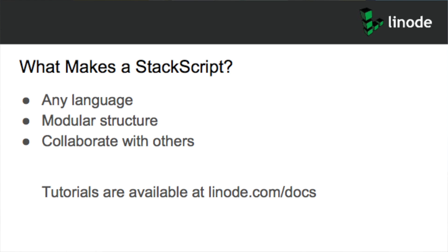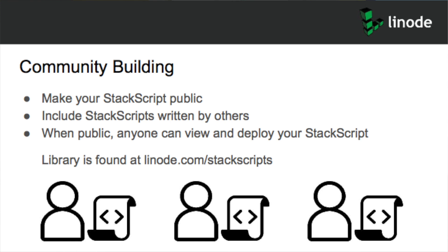For example, you could create a script for how your server updates all its applications when deployed, and another for pulling all your information from a master server. Tutorials on making Stack Scripts can be found at linode.com/docs. Community building works like this: when you make your Stack Script on our site, it starts off as private, but you can make it public. When you make it public, every Linode customer can see your Stack Script — including the entire source code — and deploy it on their own.